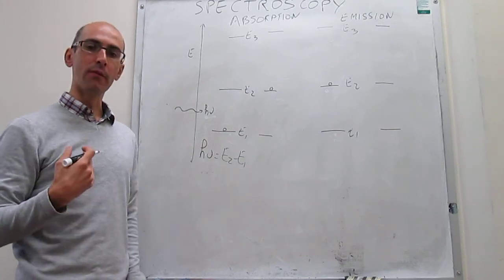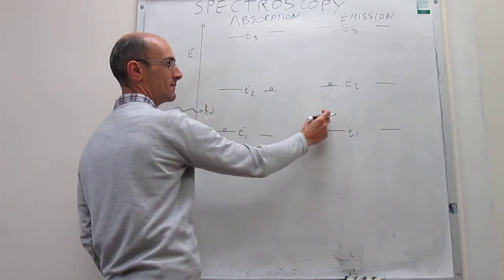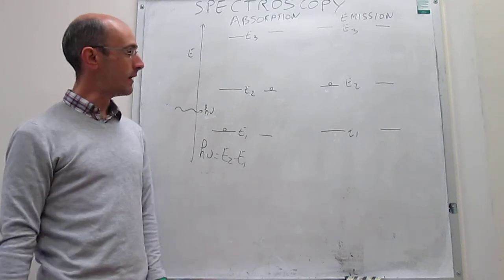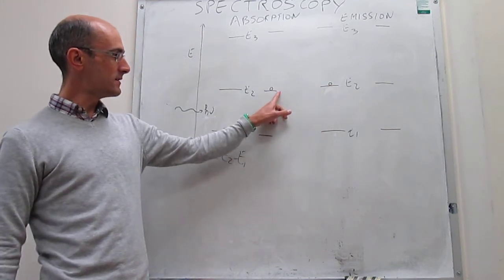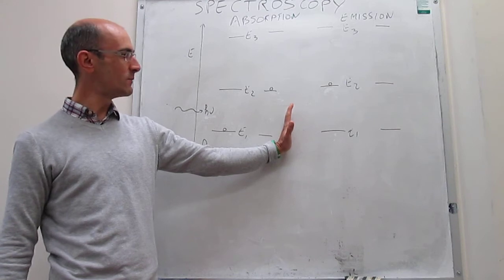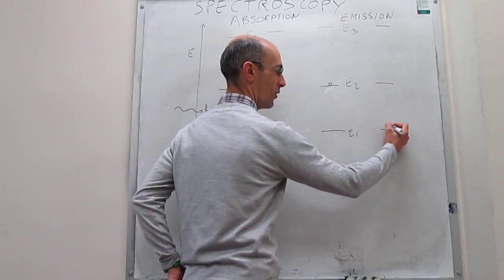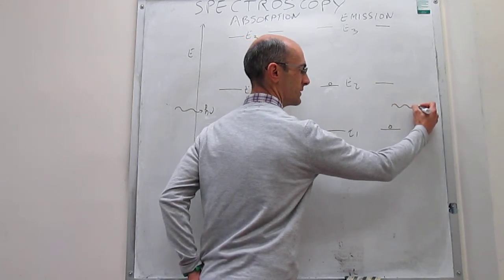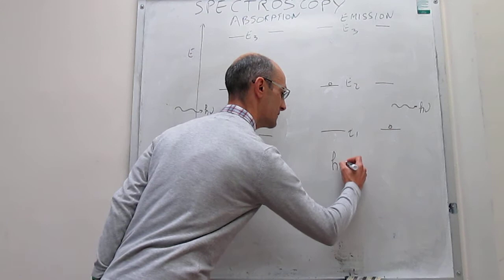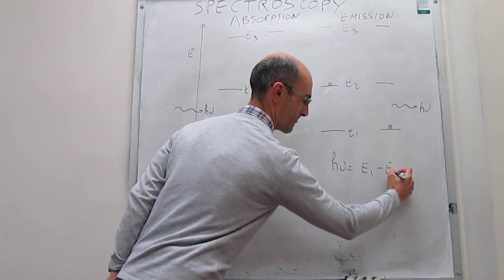Maybe we supplied some thermal energy to the sample, and a non-trivial number of systems absorbed that thermal energy from the surroundings and reached energy state E2. Or perhaps this excited state is simply what results after you excite the system from the ground state in a prior absorption experiment. In the emission experiment, what happens is that the system hops back to the ground state, and the energy it loses when doing so is emitted as a photon. The resonance condition is that the energy of the emitted photon must be coincident with the difference in energy between the final state and the initial state, E1 minus E2.